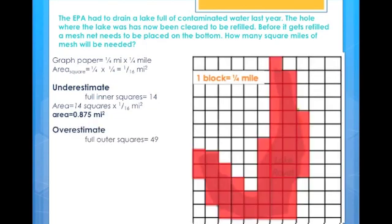Next, I will overestimate. Doing this, I counted 49 squares. To find the area, you will multiply 49 by one-sixteenth, and the area equals 3 and 6 one-hundredths square miles.